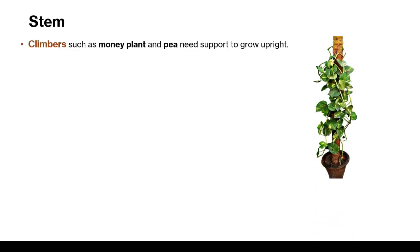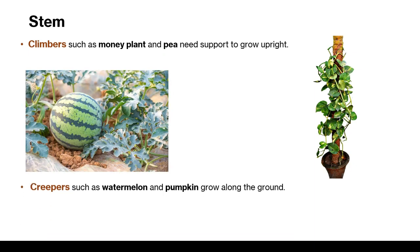Climbers such as money plant and pea need support to grow upright. And do you know what are creepers? Creepers such as watermelon and pumpkin grow along the ground.